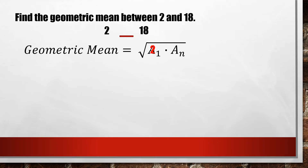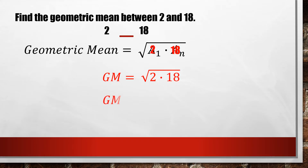The first term will be multiplied by our last term, and our last term is 18. Getting the product of these two, we will have our geometric mean equal to the square root of 2 times 18. Simplifying this, we will have the square root of 36. Getting the square root of 36, we know that it could be positive or negative 6. So therefore, this will be our geometric mean.